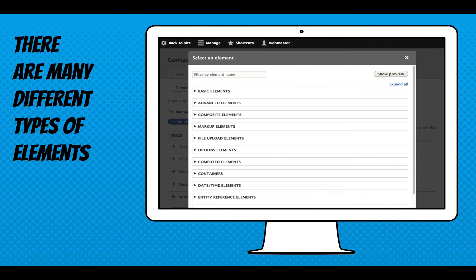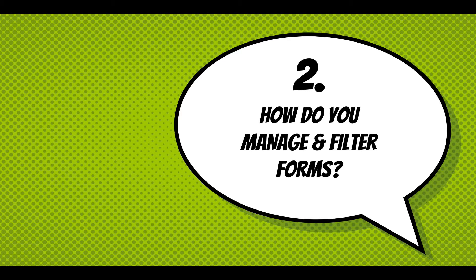There are many different types of elements. This is just showing the categorization that's broken down: there's basic, advanced, composites, and markup. We'll walk through these in a second. How do you manage and filter forms? That's what we're really focusing on on the form side of things — elements we'll come back to a little bit.